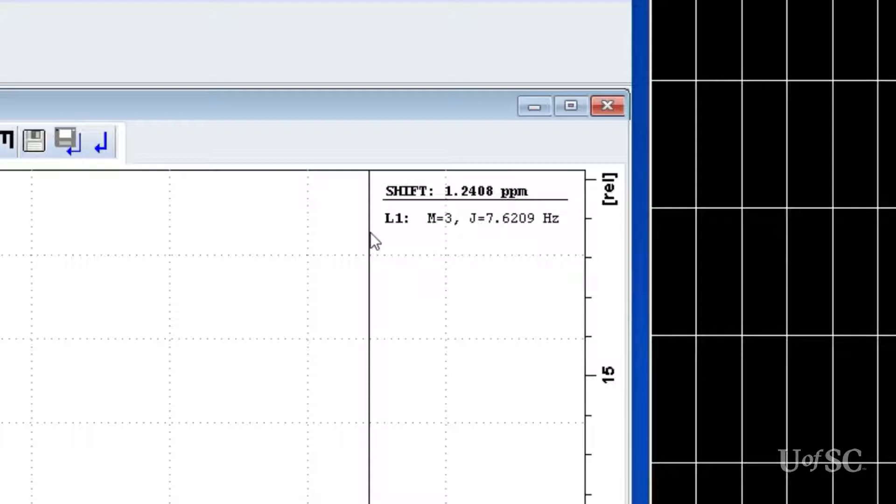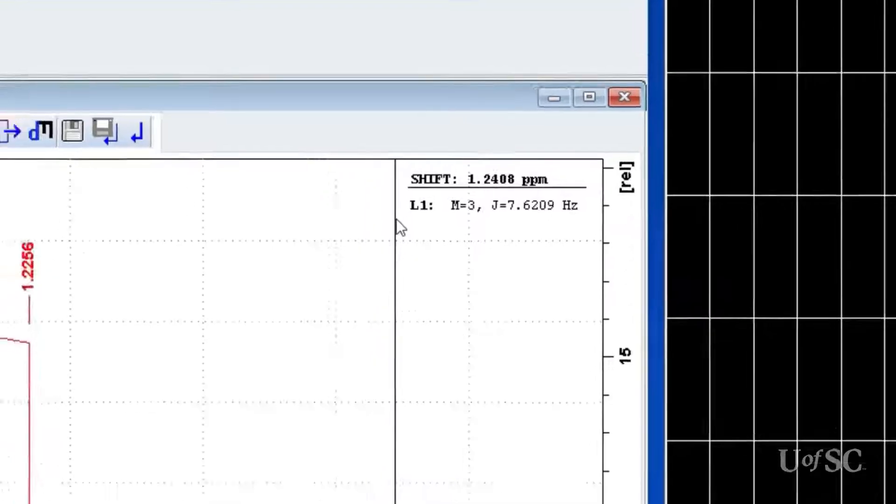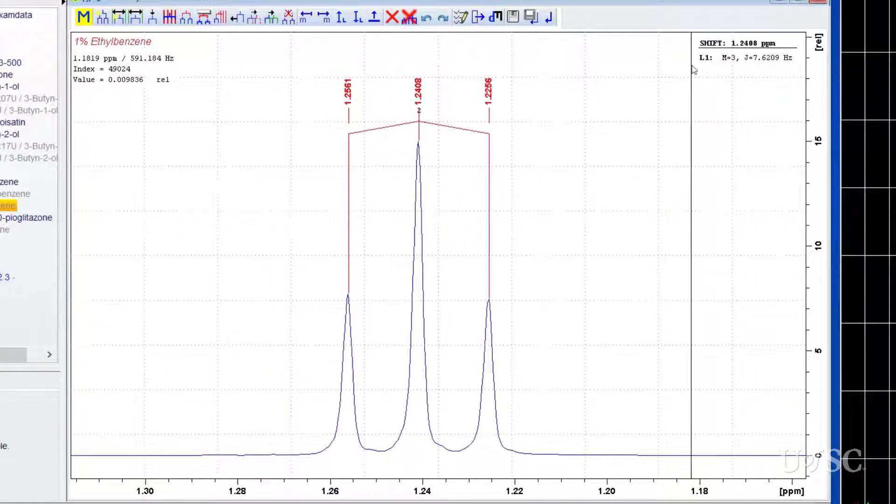Note that the coupling constant is shown as a number with four decimal places. This is not the actual precision of this measurement. The resolution of a spectrum is controlled by how long the free induction decay is measured. For default parameter sets, this value ranges from 3 to 5 seconds. The resulting resolution in Hertz is the reciprocal of this acquisition time and will usually be about 0.2 to 0.3 Hertz. Keep this in mind as you compare coupling constants and make spectral assignments.